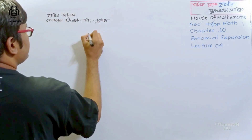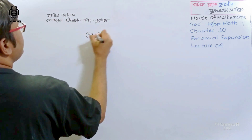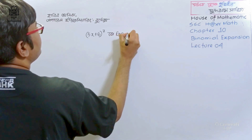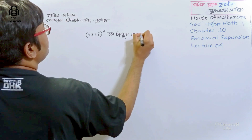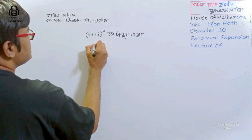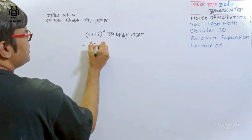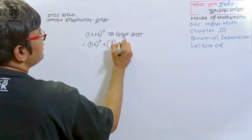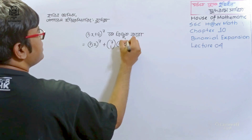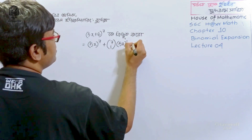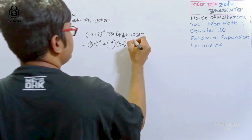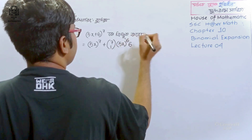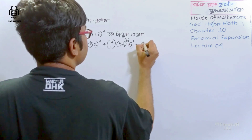Let's say we will apply this to 5 plus 6 to the power 7. We will write the formula. The number raised to the power 7 — beginning with the first term, we write plus C(7,1)...